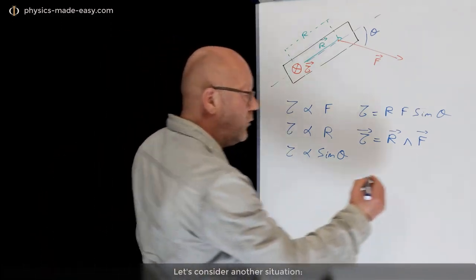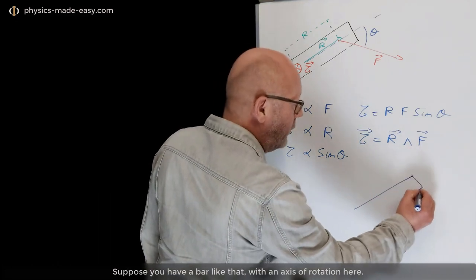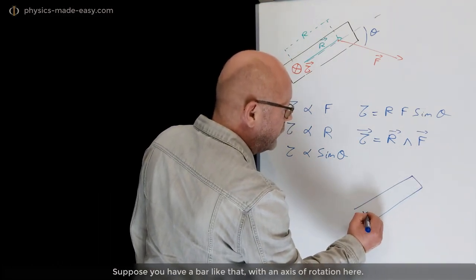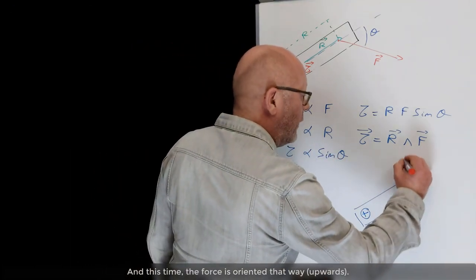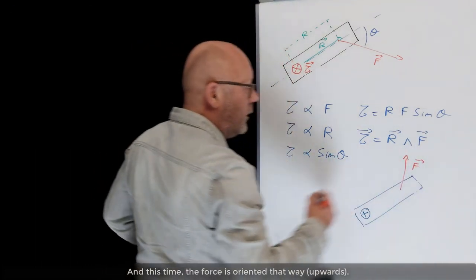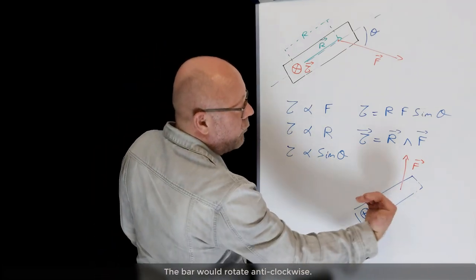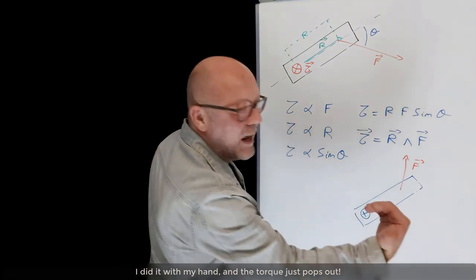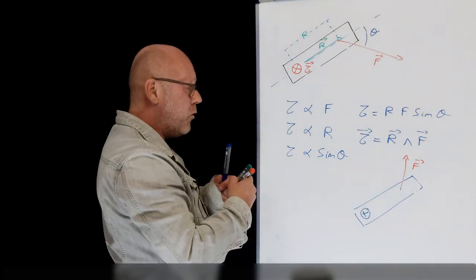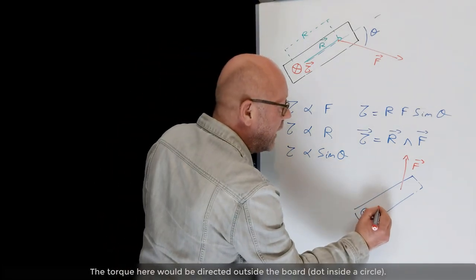Let's consider another situation. Suppose you have a bar like that, with an axis of rotation here. And this time, the force is oriented that way. So you see, the bar would actually rotate anticlockwise. And you see, I did it with my hand. The torque just pops out. So the torque here would be directed outside the board.